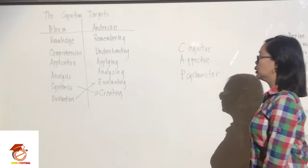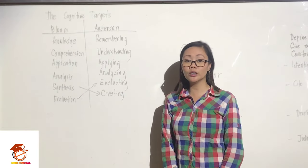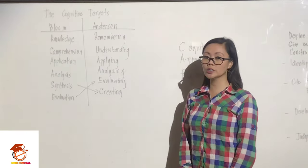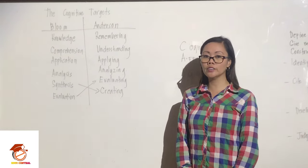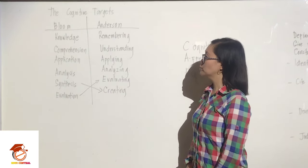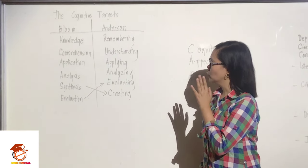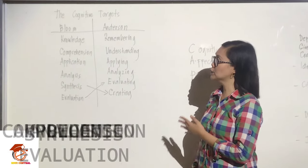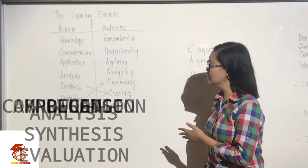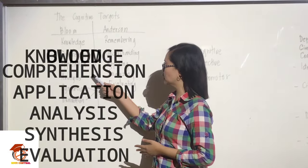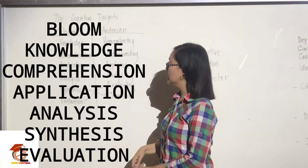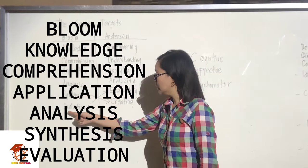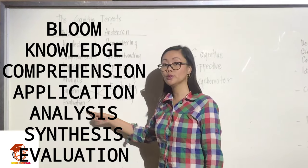We will now start with cognitive targets. For cognitive taxonomy we have two references: Bloom's taxonomy and Anderson's taxonomy. For Benjamin Bloom, we have the mnemonic K-C-A-A-S-T: K stands for knowledge, C is for comprehension, A is application, then analysis, S is for synthesis, and T is for evaluation.